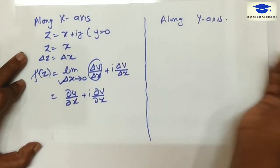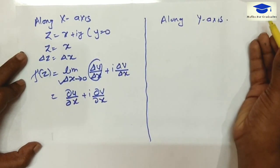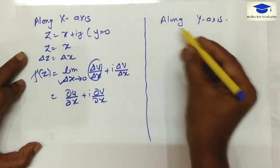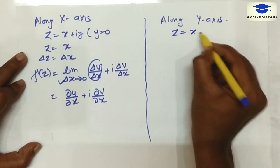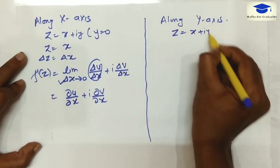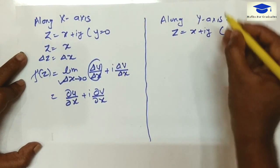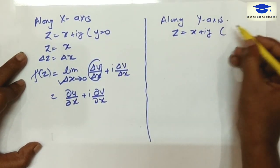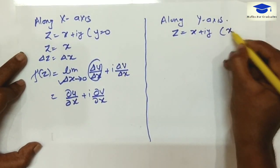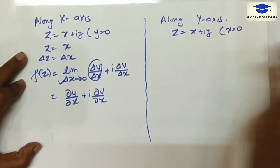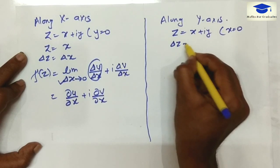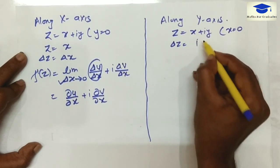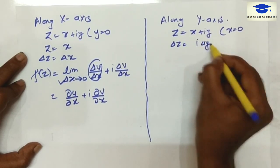If we approach Δz along the y-axis, z = x + iy, and for the y-axis x equals 0. Now, Δz will be i times Δy.